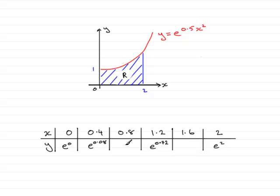So to do that, this is very easy. All you've got to do is just substitute x is 0.8 into the curve here just to get y. So e to the 0.5 times 0.8 squared will give you e to the 0.32.